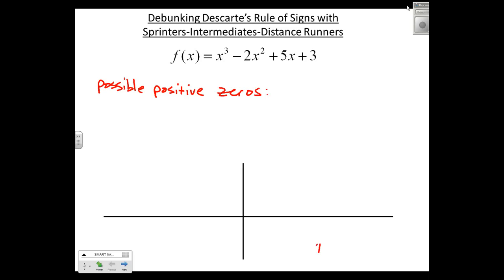That means zeros that are located to the right of zero. In other words, if I have a graph that goes through this point, that would be a positive zero.